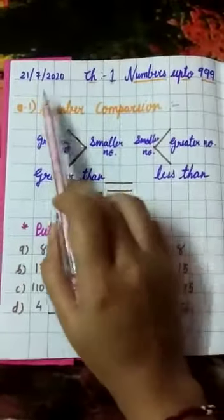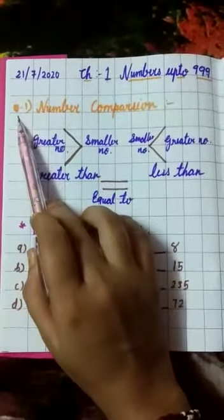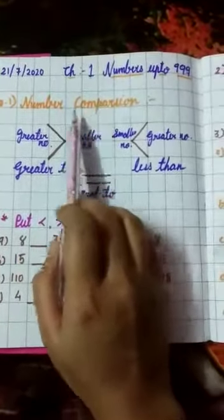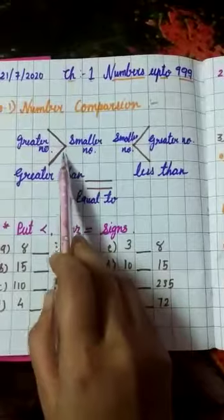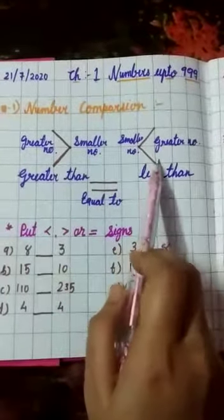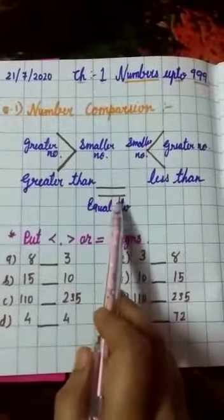After that, leave one line. In the margin, write question number 1: Number comparison. Then leave one line, and using two lines, you have to make a greater than sign, less than sign, and equal to.